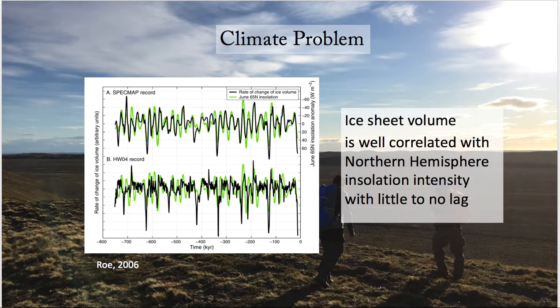It's been well established that summer temperature is the primary control on glacier change, and summer temperature is controlled in part by summer incoming solar radiation, or insolation. So insolation should be a control on global glacial cycles. We have some nice datasets that show that ice sheet volume is well correlated with northern hemisphere insolation intensity with little to no lag.